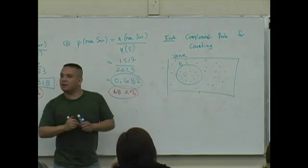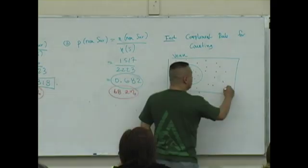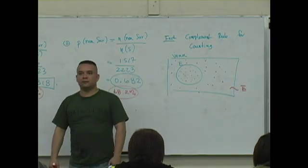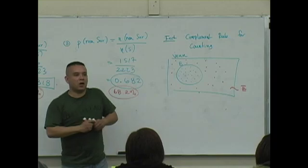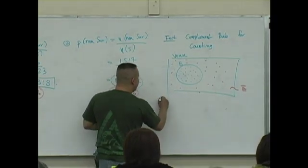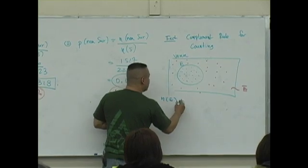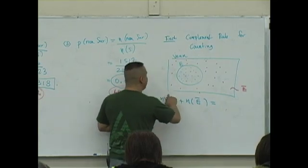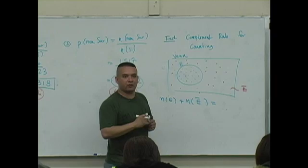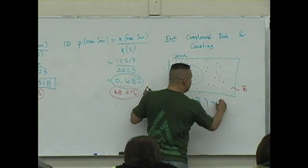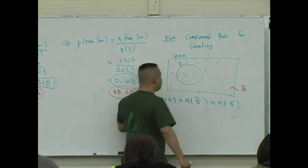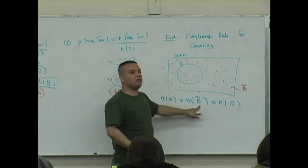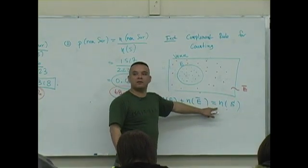Good, they're not in E. They're in the complement. These are people not in E. So if I count the number of people that are in E plus the number of people that are not in E, that are in the complement, what should that equal? The total. If these are events, it's the total in the sample space. The number of outcomes that are in E plus the number of outcomes that are not in E equals the total number of outcomes in the sample space.